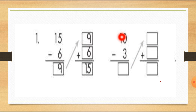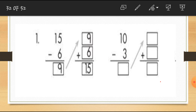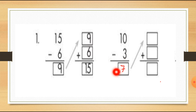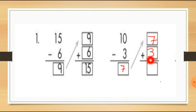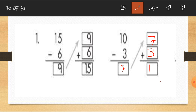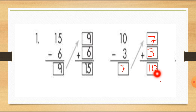Now let's solve 10 minus 3. So 10 minus 3 equals 7. I write 7 here. Now we add this 7 into 3: 7 plus 3 equals 10. We get the answer 10, which matches the original. Our answer is right. Hope you understood this topic.